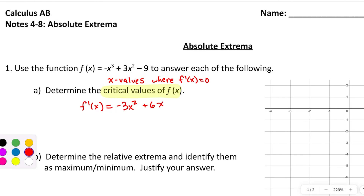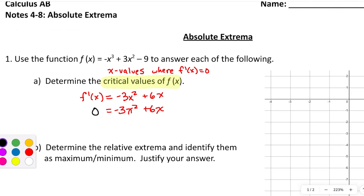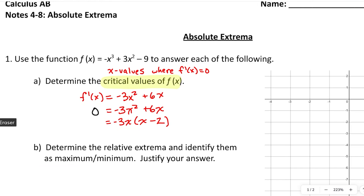To find the critical values, we set f prime equal to zero and solve for x. We factor out the GCF, which is negative 3x, giving us negative 3x times (x minus 2). So the critical values are x equals zero and x equals two.